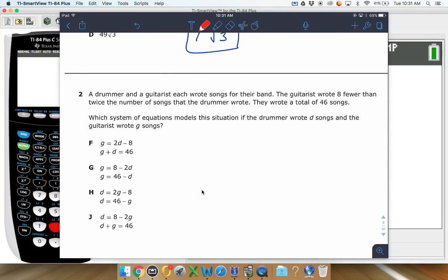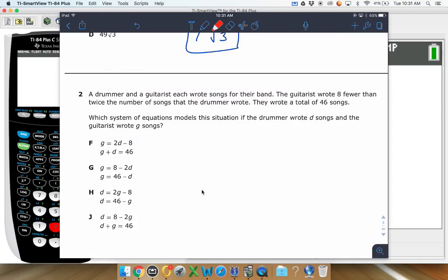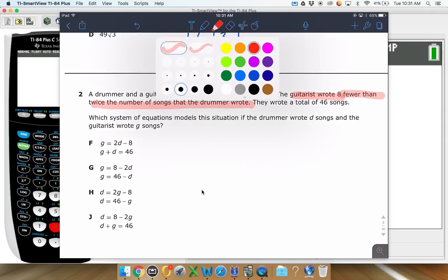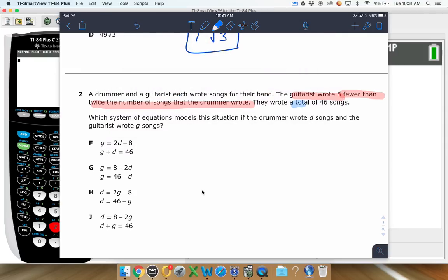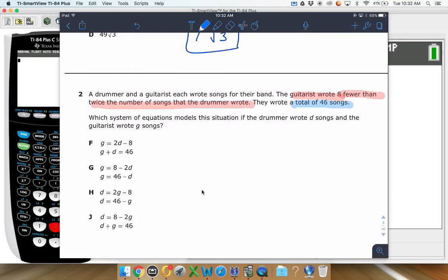The next one here. A drummer and a guitarist each wrote songs for their band. The guitarist wrote eight fewer songs than twice the number of songs that the drummer wrote. So I'm going to highlight that first situation. Eight fewer songs. The guitarist wrote eight fewer songs than twice the number of songs that the drummer wrote. And then there's another situation here. Together, they wrote a total of 46 songs. So actually, I'm going to deal with that blue part first.